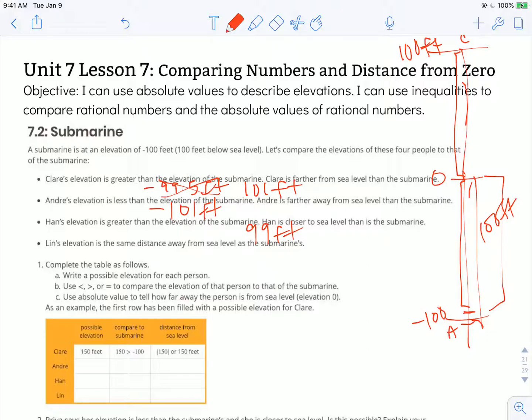Lynn's elevation is the same distance away from sea level as the submarine's. So Lynn could be in one of two places: at negative 100 feet or at positive 100 feet. Either one would work because those are both the same distance from sea level as the submarine is. Let's just go ahead and pick positive 100 feet.